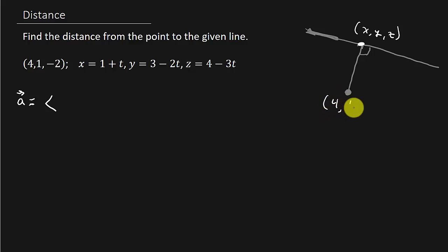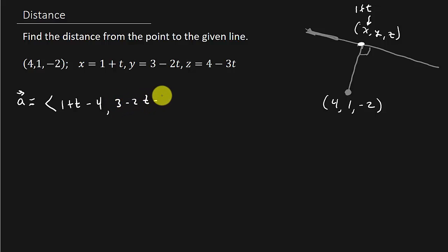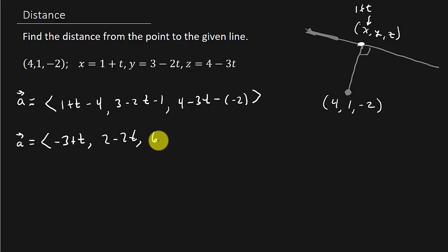Our point is (4, 1, -2), so the components are x minus 4, y minus 1, and z minus (-2). Substituting the parametric expressions, that gives: 1+t minus 4, then 3-2t minus 1, and 4-3t minus (-2). Simplifying, vector A equals (-3+t, 2-2t, 6-3t).